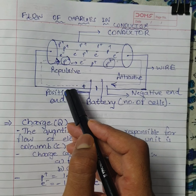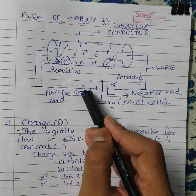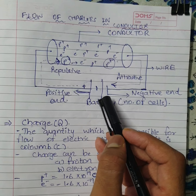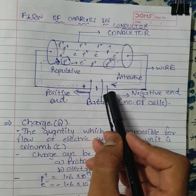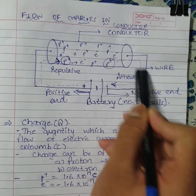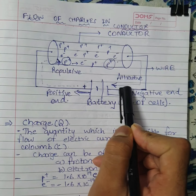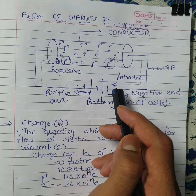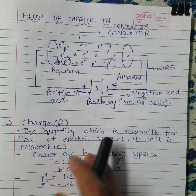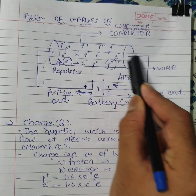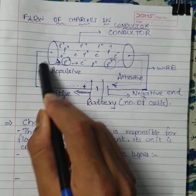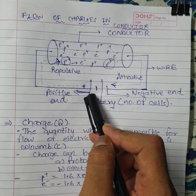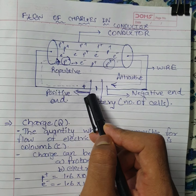In conventional current, the direction of current is from higher potential to lower potential. In electron current, as the name suggests, current flows from the negative terminal to the positive terminal. However, in each and every numerical and electric circuit in our textbook, we consider conventional current, flowing from positive to negative.